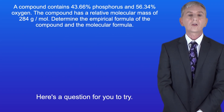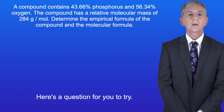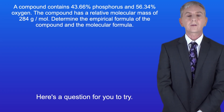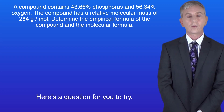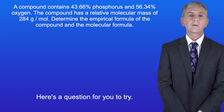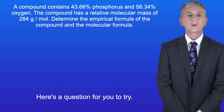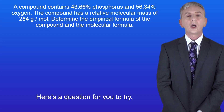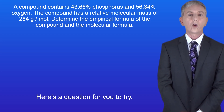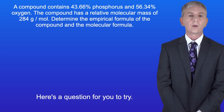Here's a question for you to try. A compound contains 43.66% phosphorus and 56.34% oxygen. The compound has a relative molecular mass of 284 grams per mole. Determine the empirical formula of the compound and the molecular formula.